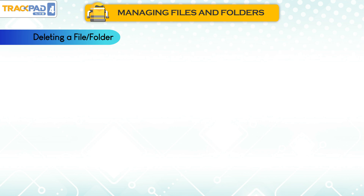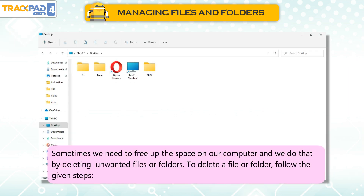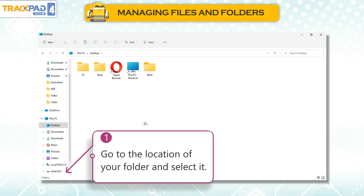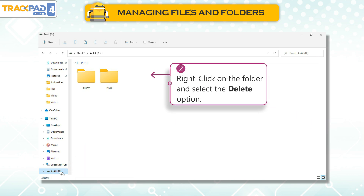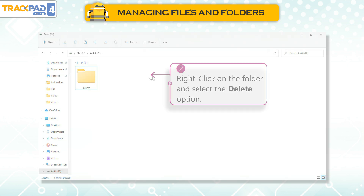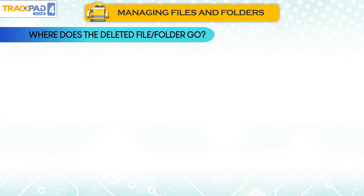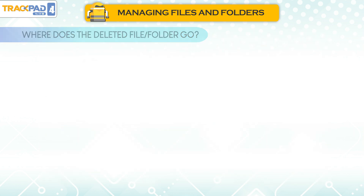Deleting a File or Folder. Sometimes we need to free up the space on our computer, and we do that by deleting unwanted files or folders. To delete a file or folder, follow these steps: 1. Go to the location of your folder and select it. 2. Right-click on the folder and select the Delete option.